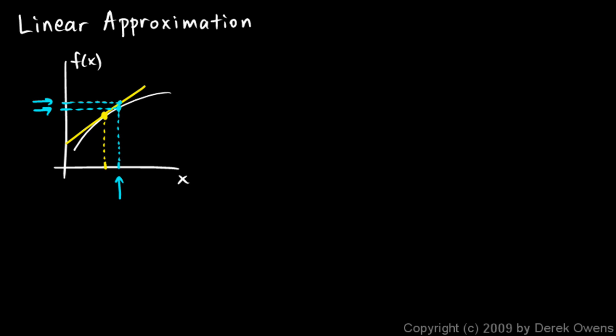It will be a pretty good approximation if this x value isn't too far away from our original x value. You might ask why we'd want to do that — why not just calculate the value of the function? The answer is sometimes it's hard to calculate, or sometimes we may not know the actual function and only know this point and something about the derivative at that point. So here's an example.